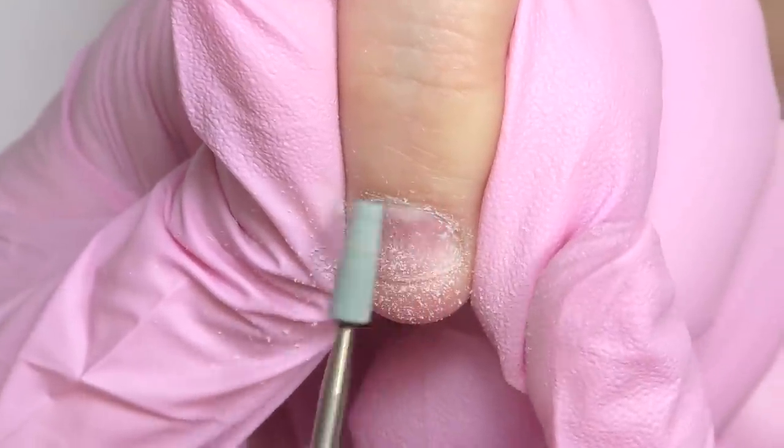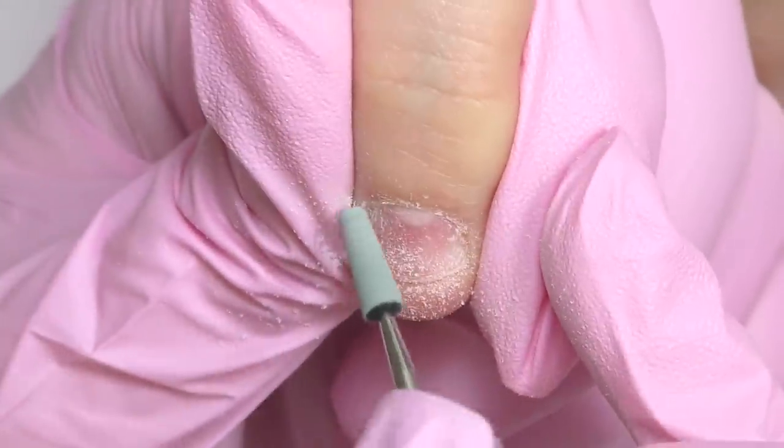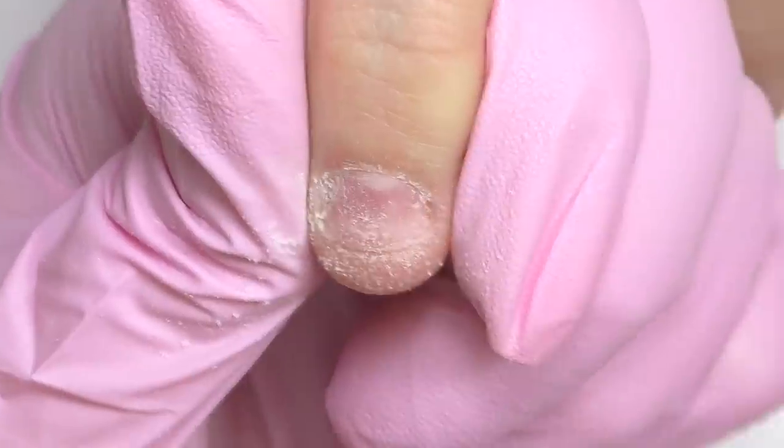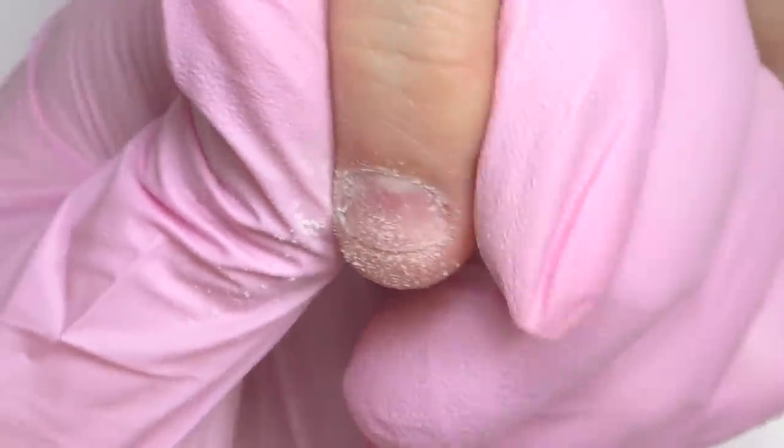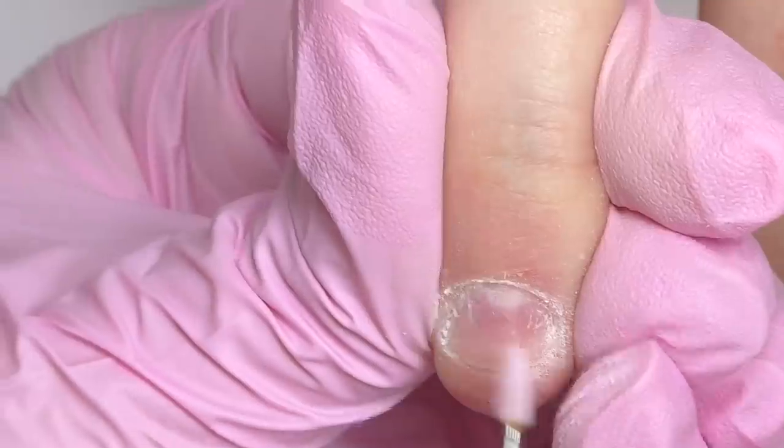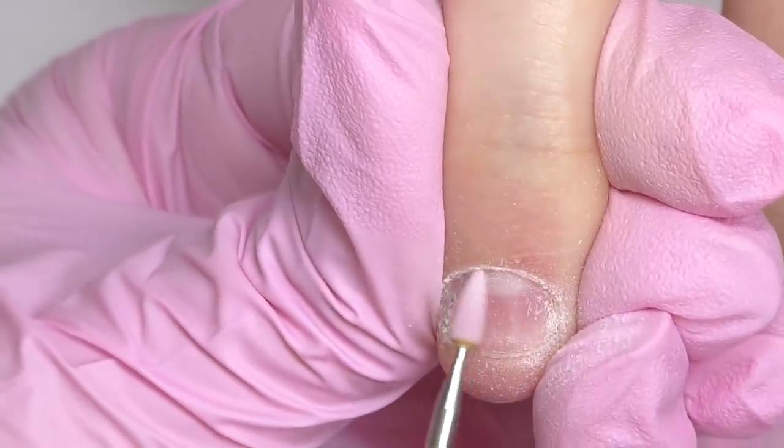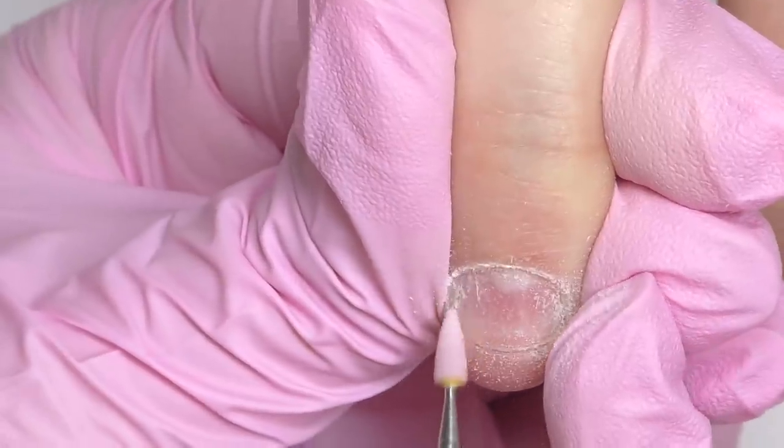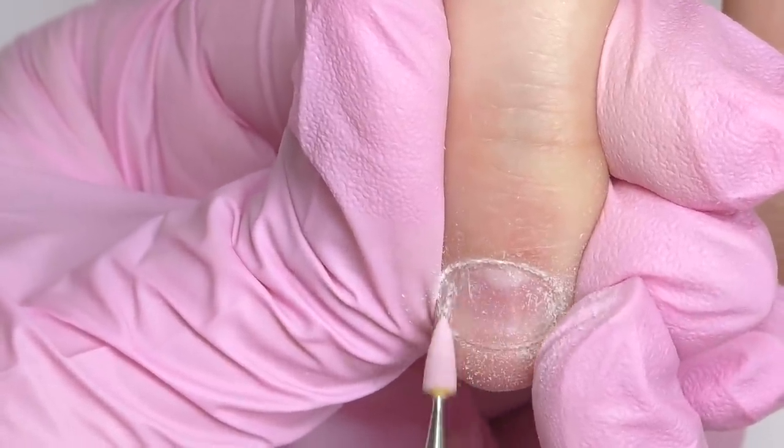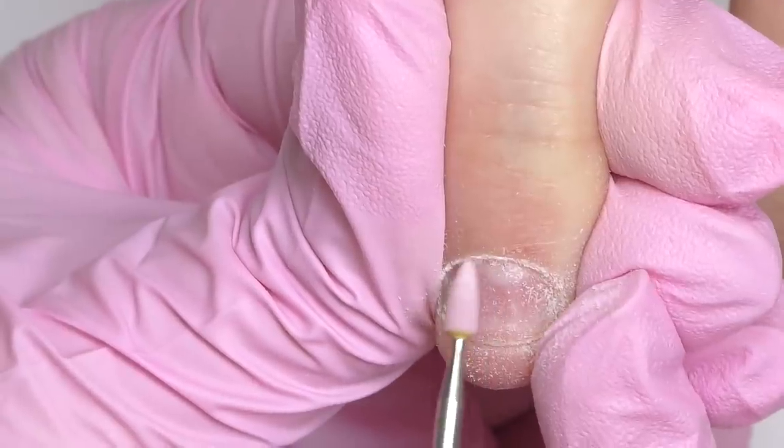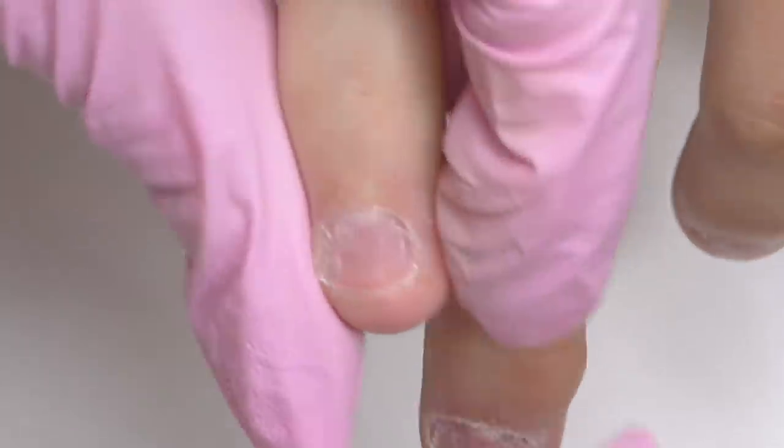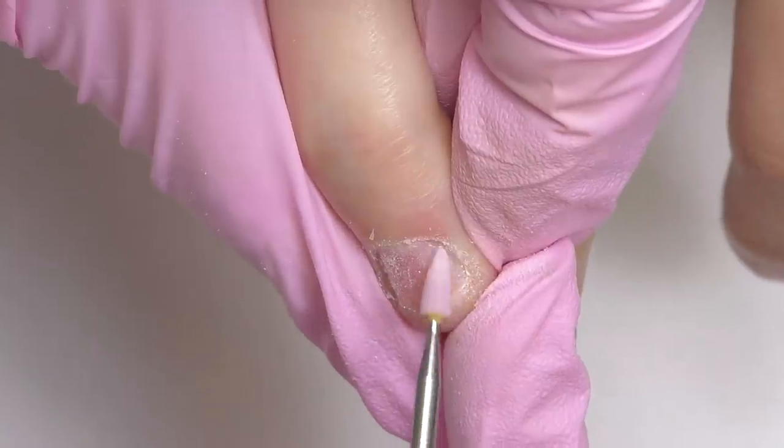So it was impossible to push back the cuticle. That's why I did it with electric nail file. First I use green ceramic bit and pushed it back and now with the softer pink ceramic bit I'm pushing it back even more.